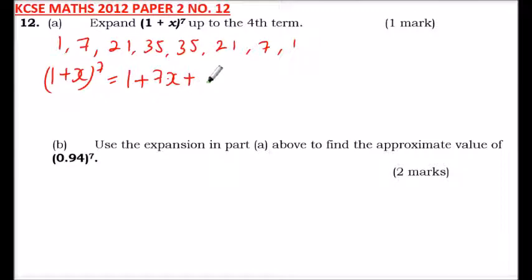We go to plus, the next coefficient is 21, so x raised to power 2, then plus 35x^3. But because we are told to go up to 4th term, we don't need to go beyond that. So you just save time and you'll be able to get one mark from there.